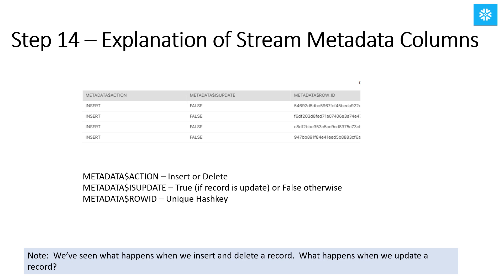To help us further understand streams, let's take a look at the stream metadata columns. The metadata section tells us whether the row was inserted or deleted. If the row is updated, then the is_update column will have a value of true. And lastly, there is a unique hash key for the row ID.